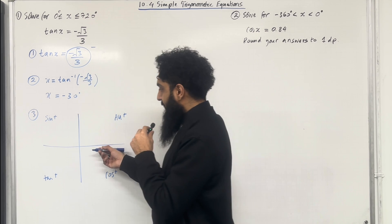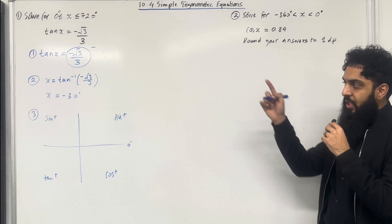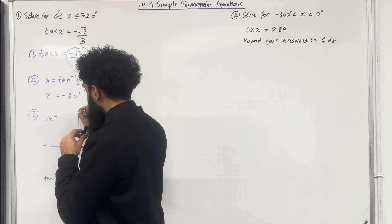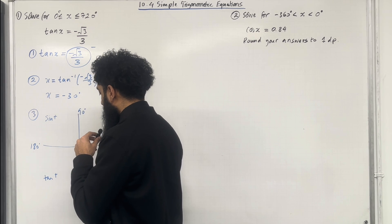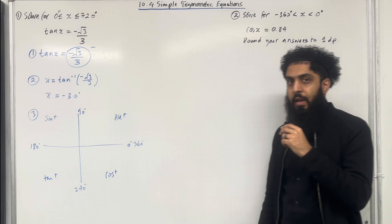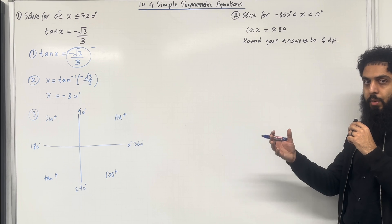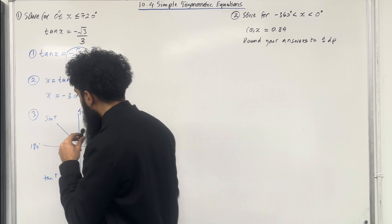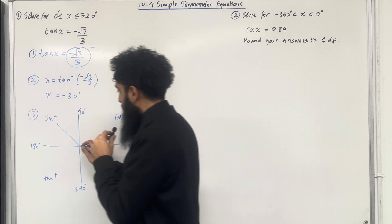Starting at the positive x-axis at 0 degrees, going anti-clockwise measures positive angles. So 0, 90, 180, 270, and 360 degrees. Since tan x is a negative value, tan x is negative in the sine quadrant, so we draw a line there. It is also negative in the cosine quadrant, so we draw a line there too.